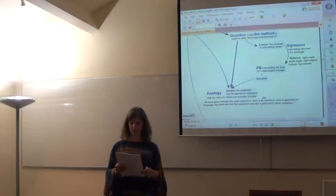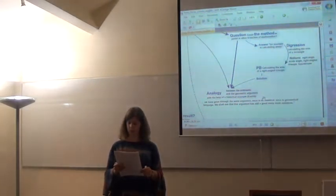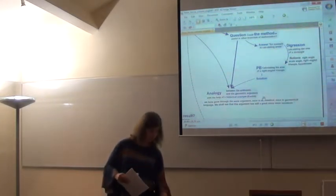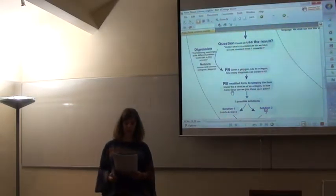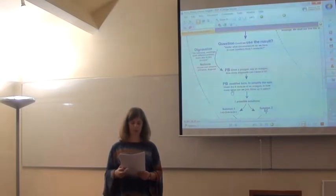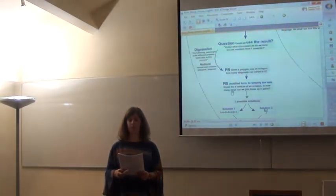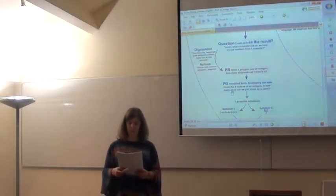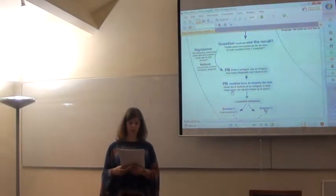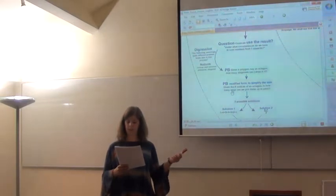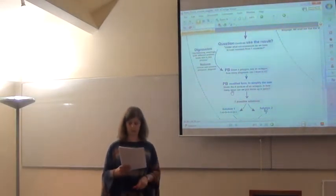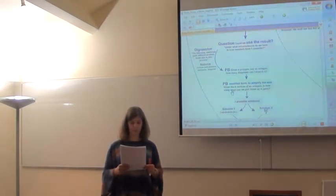At the end of the chapter, Rózsa Péter concludes that we have gone through the same argument, once in arithmetical, once in geometrical language. We shall see that this argument has still a great many more variations. And in the fifth chapter, she shows more variations. The starting question of this new chapter is whether we could use the result of our original problem. Under what circumstances do we have to sum numbers from one to n? To give an example, she proposes a new problem which is seemingly quite different. Given a polygon, say an octagon, how many diagonals can I draw in it? Let me notice that the problem is now general, but we will work using a specific example. In this case, an octagon.